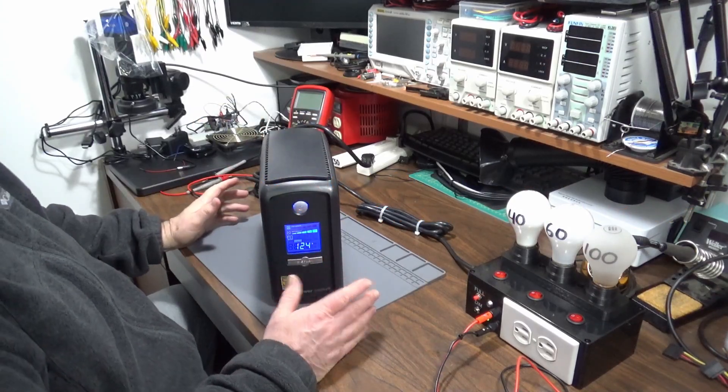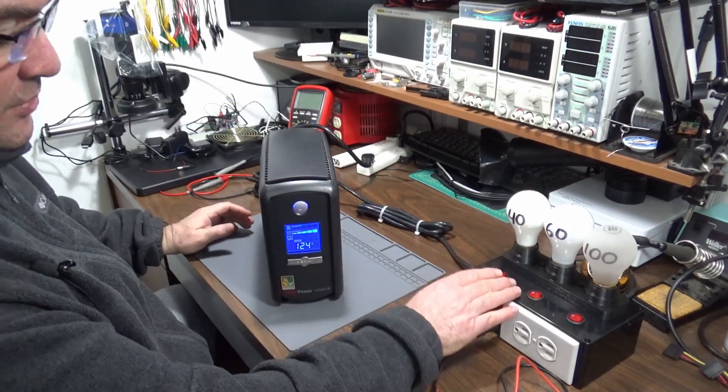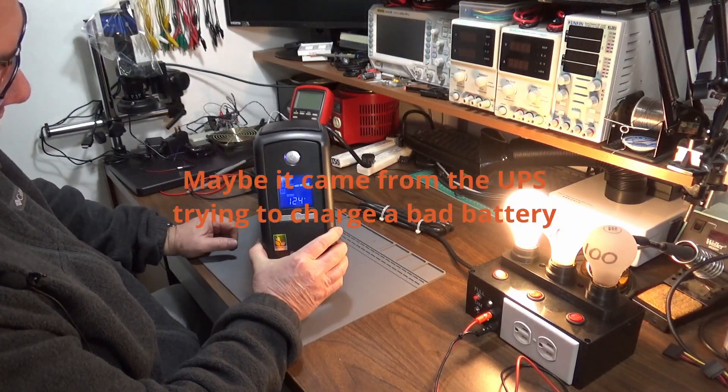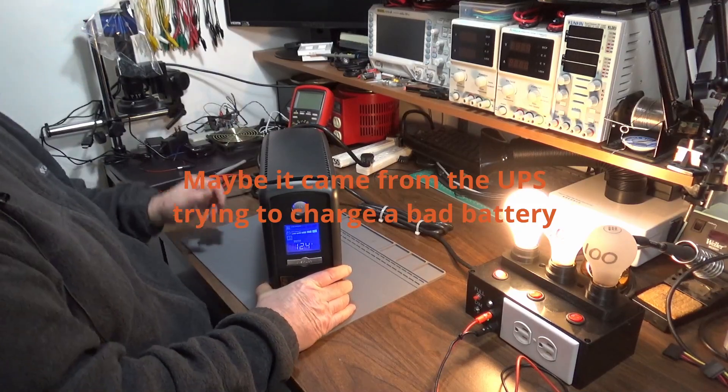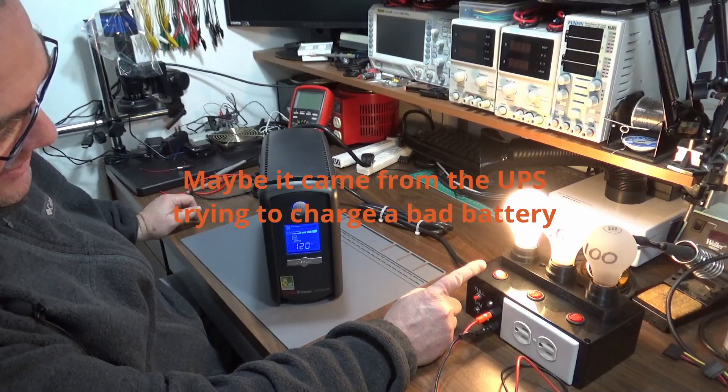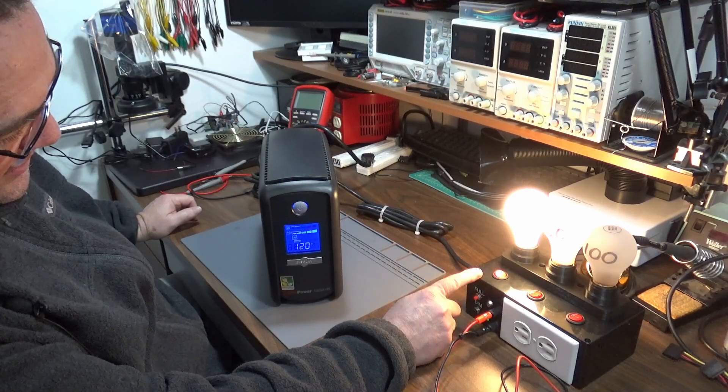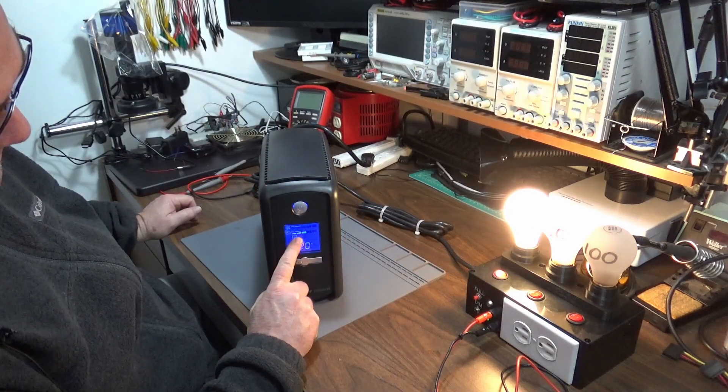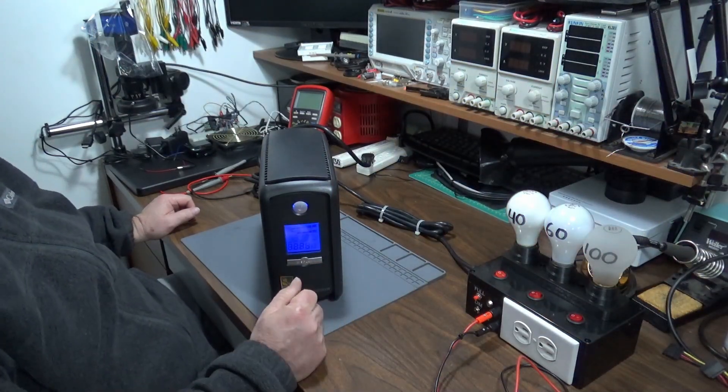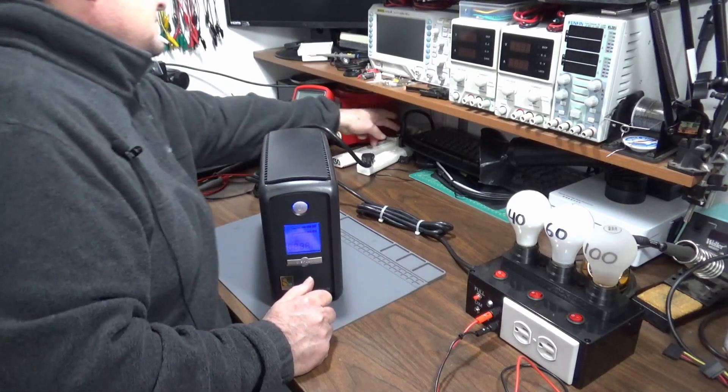So what I'm going to do on the bench is simulate a very light load, a 40 watt light bulb. Battery power shows full. Shut off the power. It maintains it. 40 watt load. Already beeping. Battery's gone to half. Battery's empty. And it shuts off. So that is a bad battery or signs of a bad battery.